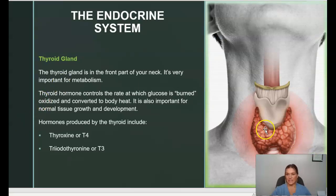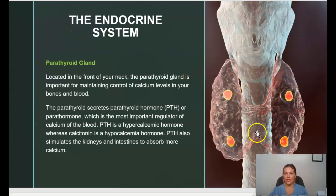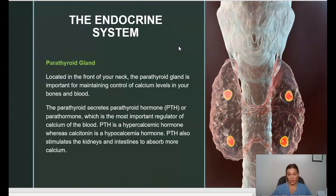The thyroid gland is in the front part of your neck and is very important for metabolism. The thyroid hormone controls the rate at which glucose is burned and converted to body heat, and is important for normal tissue growth and development. The thyroid produces thyroxine (T4) and triiodothyronine (T3). The parathyroids are located within the larger thyroid gland and are important for maintaining control of calcium levels in the bones and blood, secreting parathyroid hormone, which is an important regulator of calcium in the blood.